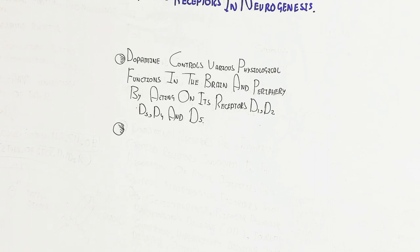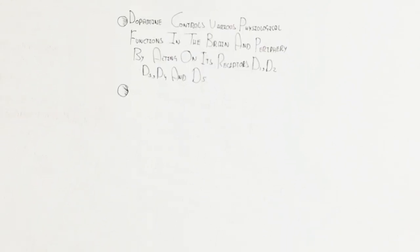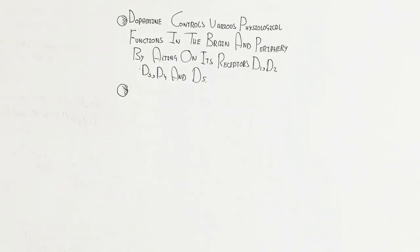Dopamine controls various physiological functions in the brain and periphery by acting on its receptors D1, D2, D3, D4, and D5.